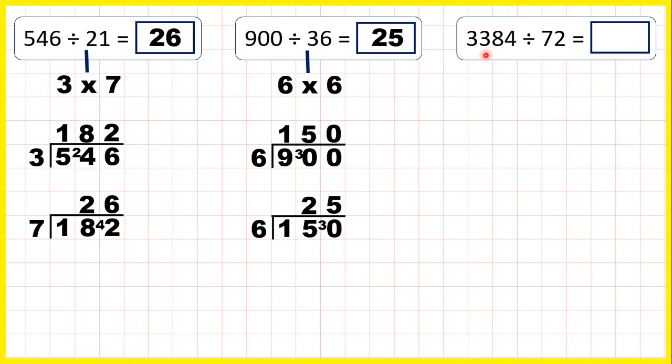Now 3384 divided by 72. For 72, we can use 8 times 9. So we can divide by 8, then take our answer and divide it by 9.